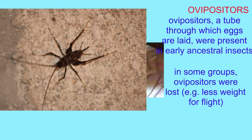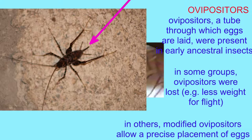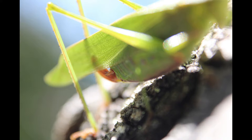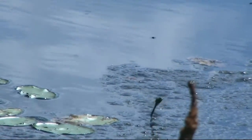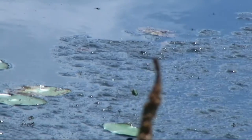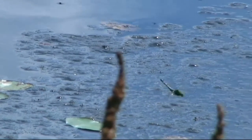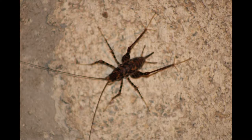The females of some of the earliest insects, and most insect groups today, have what are known as ovipositors from the tips of their abdomen — a tube through which eggs are laid. Some groups of insects have lost ovipositors, for example perhaps to make them lighter as an adaptation for flight, while in others, modified ovipositors allow a precise placement of eggs.